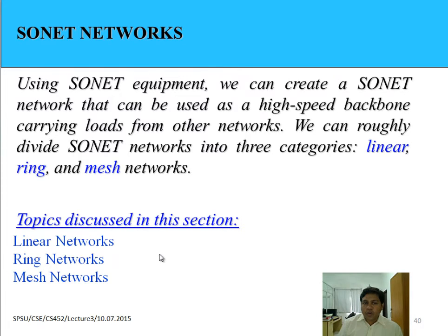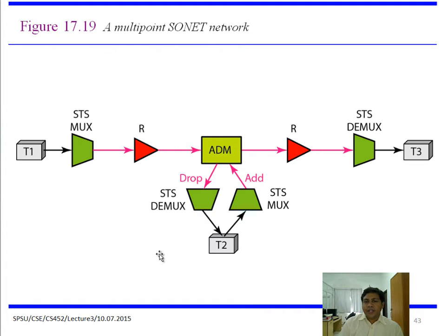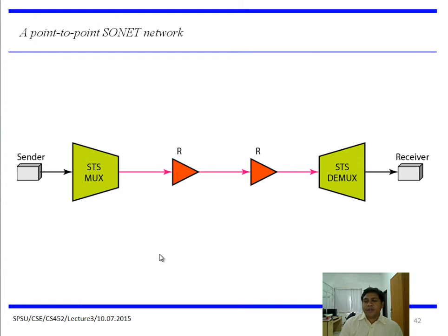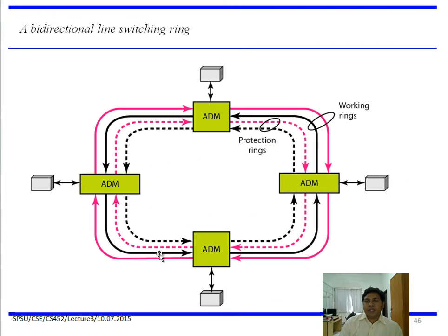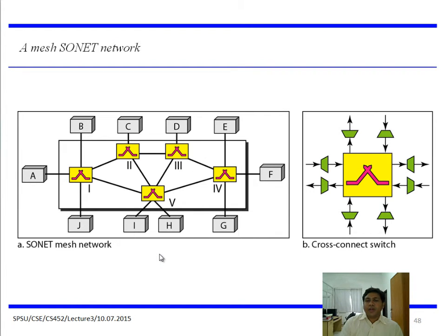SONET equipment can have different topologies. SONET network has three types: linear network, ring network, and mesh network. Linear can be point-to-point or multipoint. Ring network types are UPSR and BLSR. Mesh can be partial mesh or fully mesh. A ring can create a unidirectional path or a bidirectional path, and a combination ring can lead to a mesh network.